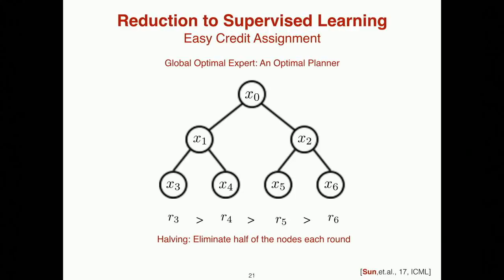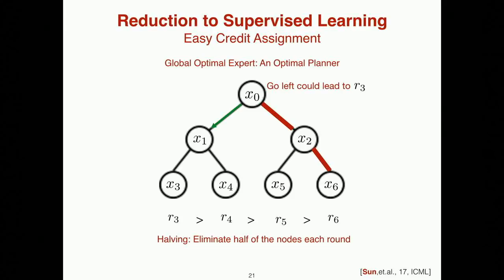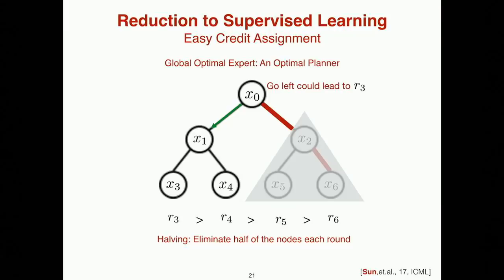We update our policy but make a mistake again at X1, ask the expert for help again, and the expert tells us to go left again. We do supervised learning again and eliminate the entire right subtree beneath that state. So every round, we are eliminating half of the remaining nodes. Through this process, we achieve logarithmic dependency on the number of states.